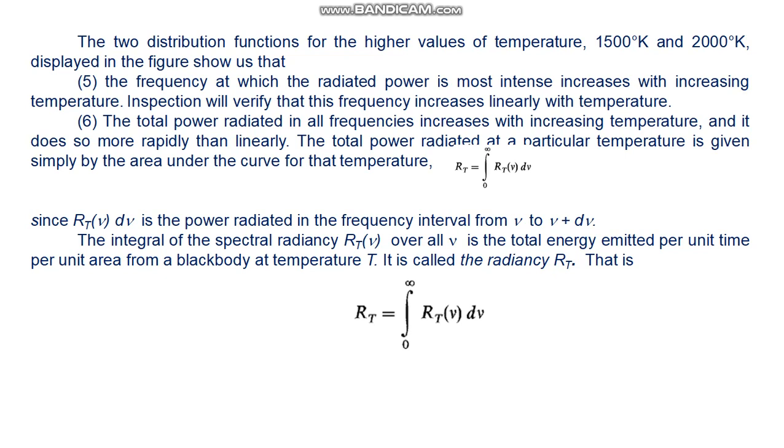R_T equals the integral from 0 to infinity of R_T(ν)dν. Since R_T(ν)dν is the power radiated in the frequency interval from ν to ν+dν, the integral over all ν is the total energy emitted per unit time per unit area from a black body at temperature T. It is called the radiancy R_T.